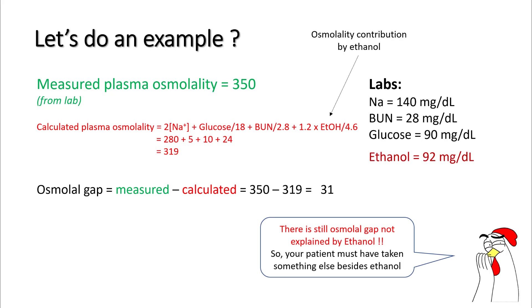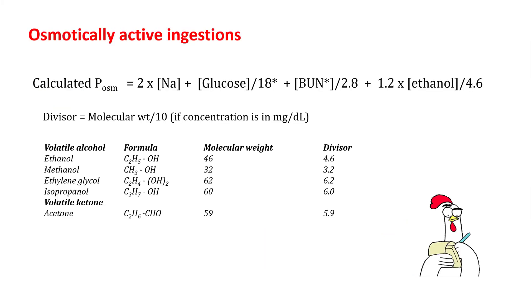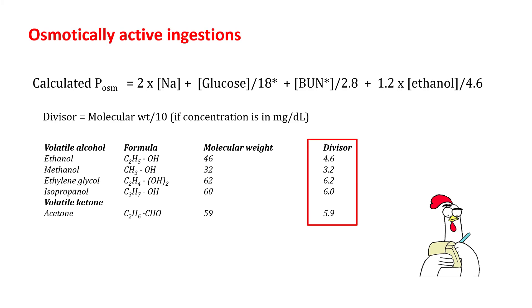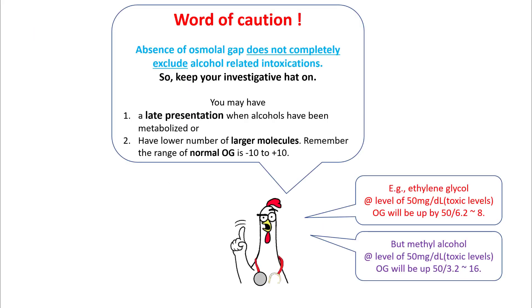To calculate these divisors, know the molecular weight and divide by 10. A word of caution: absence of an osmolal gap does not completely exclude alcohol-related intoxication, because you can have a late presentation when the alcohols have already been metabolized, or you have a lower number of larger molecules. Remember that the normal range of osmolal gap is minus 10 to plus 10.